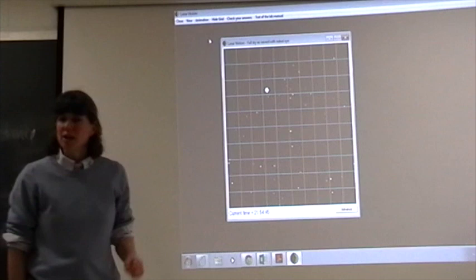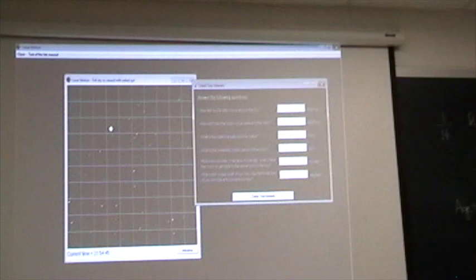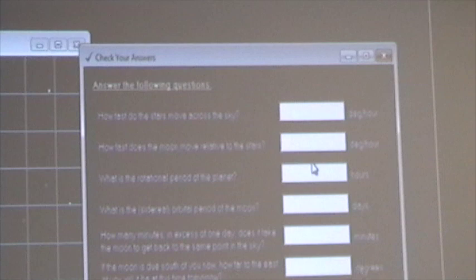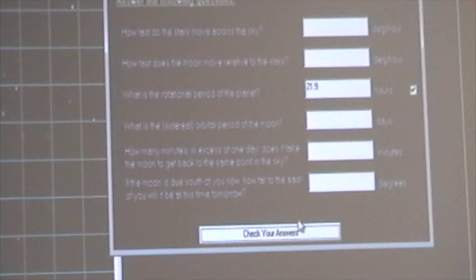So that's step one. That gives us the length of the day. I'm just going to pop up the check your answers window. It's asking for the rotational period of the planet in hours. What I'm going to do is a quick calculation. Fifty-four minutes is roughly nine tenths of an hour. So I'm going to enter this in as 21.9 hours. And it checks. So I found the correct period for the day.